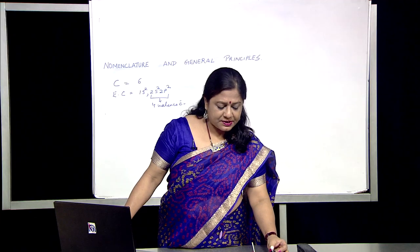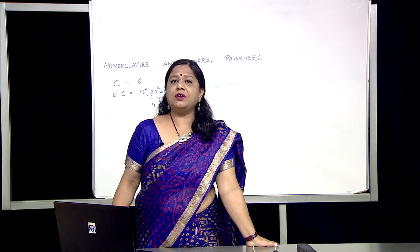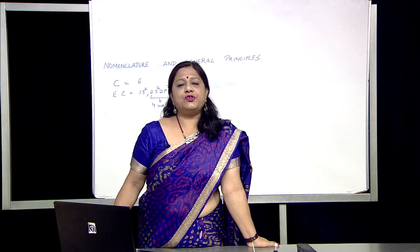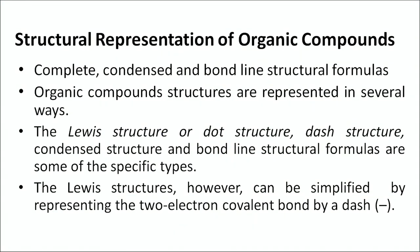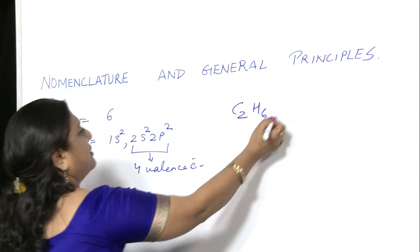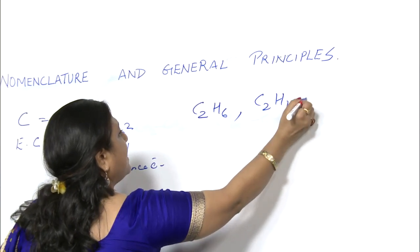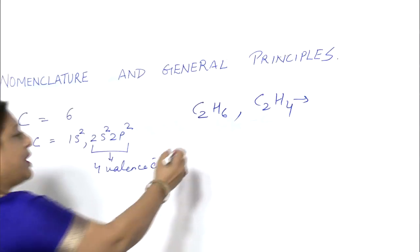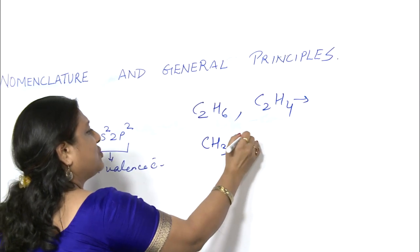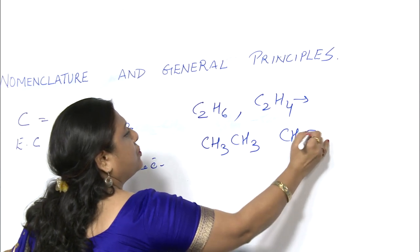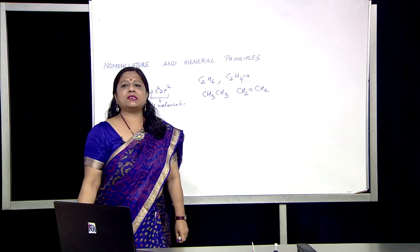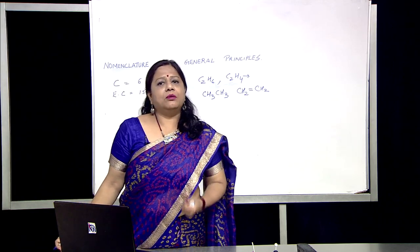Let us see how you can represent organic compounds. Structural representation of organic compounds can be in complete, condensed, and bond-line structures. From your previous knowledge, you know that the Lewis dot structure is the simplest way to represent a certain atom or molecule. But if you represent in condensed form, that is C2H6, C2H4 — this is the condensed formula. You can also write the structure as CH3-CH3, or CH2=CH2. All these are ways of representing the structures of organic molecules.